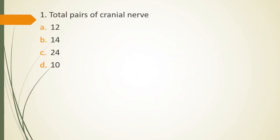Question 1, total pair of cranial nerves is 12, 14, 24 or 10. The correct answer is option A, there are 12 pairs of cranial nerves in humans.